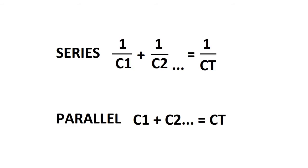When finding the capacitance total it works the opposite of finding the resistance total. So in series it's 1 over capacitor 1 plus 1 over capacitor 2 and so on and so forth. This then equals 1 over capacitance total.